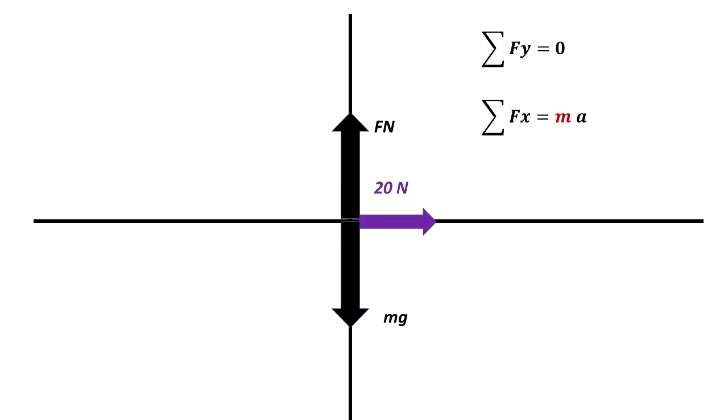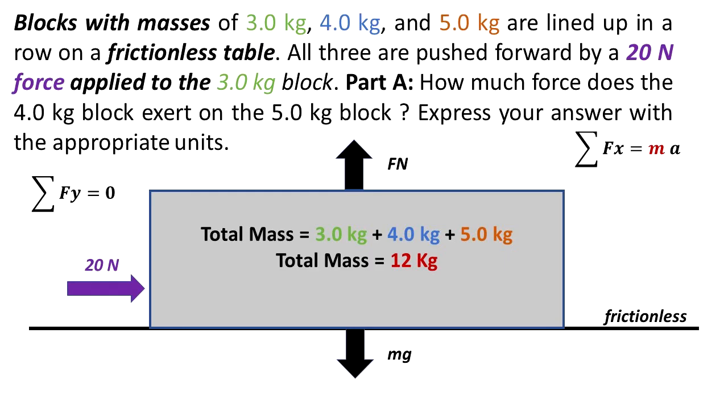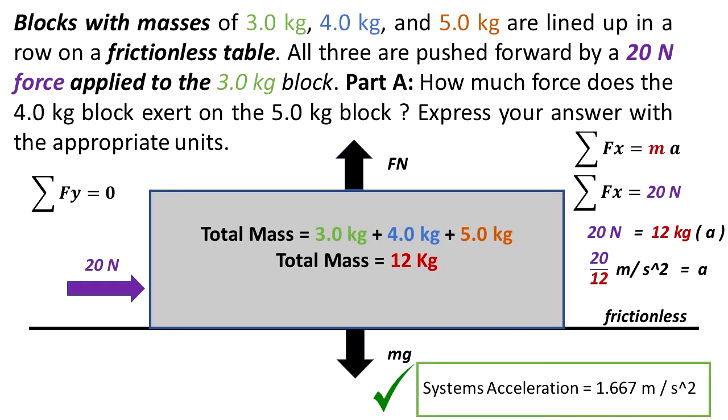The only force being applied to the system in the x is the 20N force. That means that 20N equals 12kg times acceleration. From this, we can conclude that the acceleration is 20 over 12. That means the system acceleration is 1.667 meters per second squared.